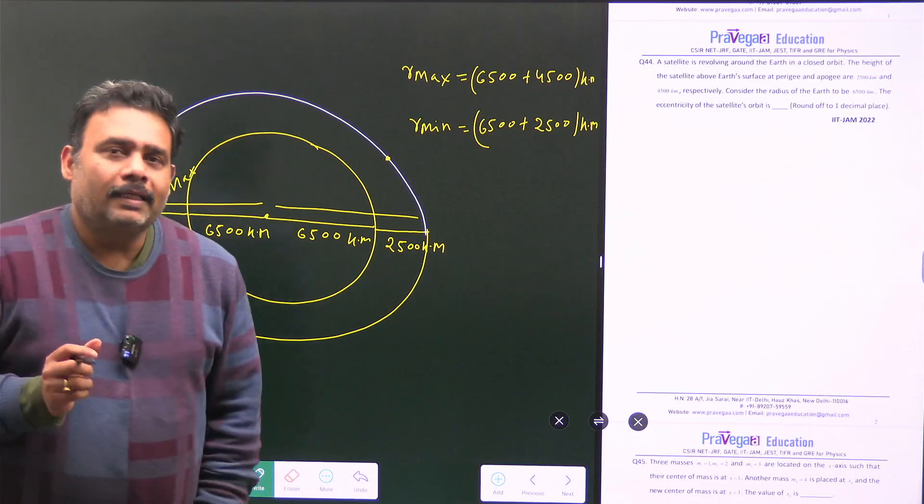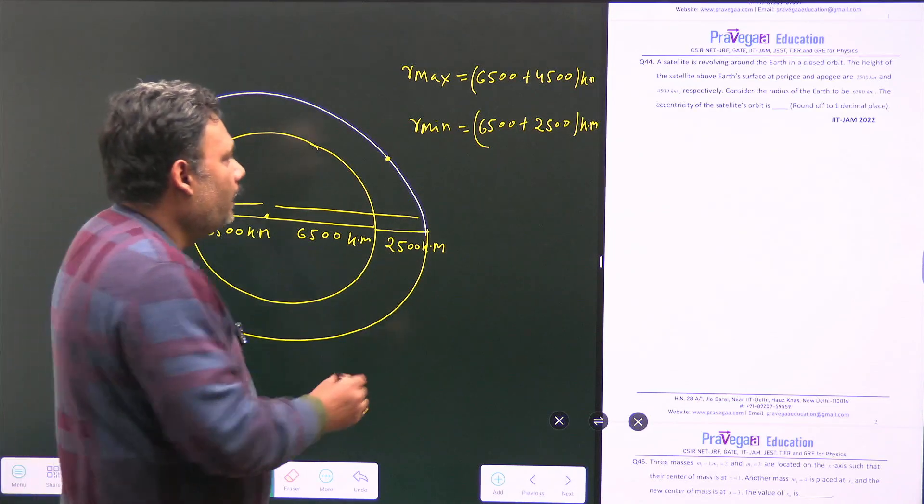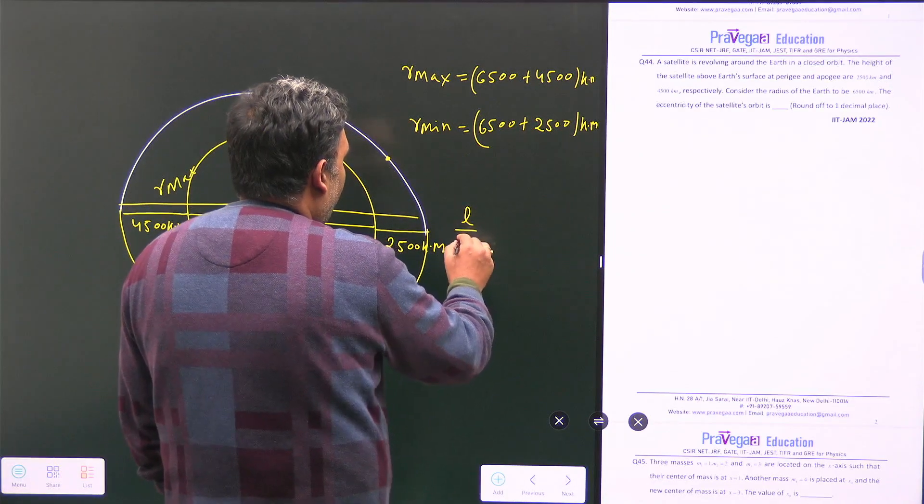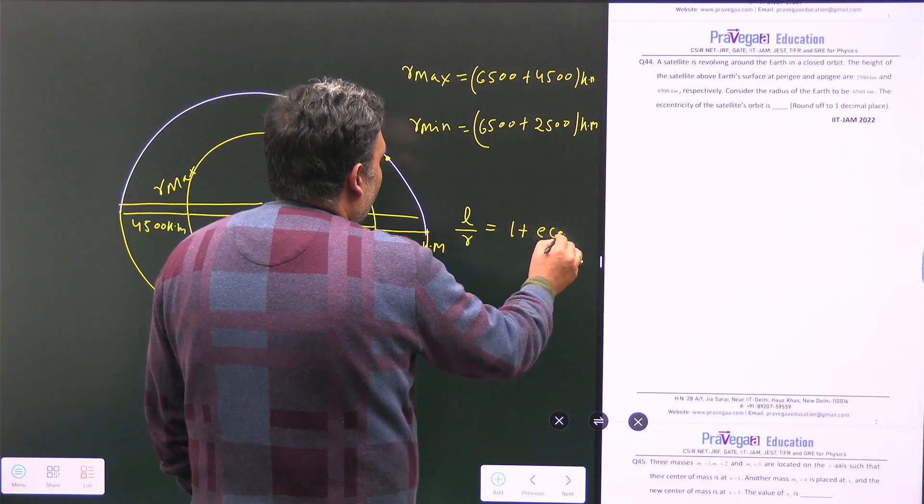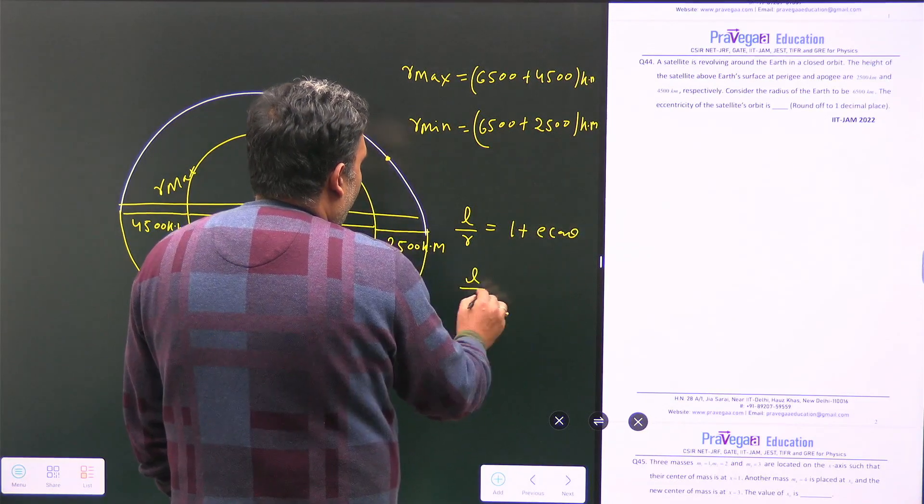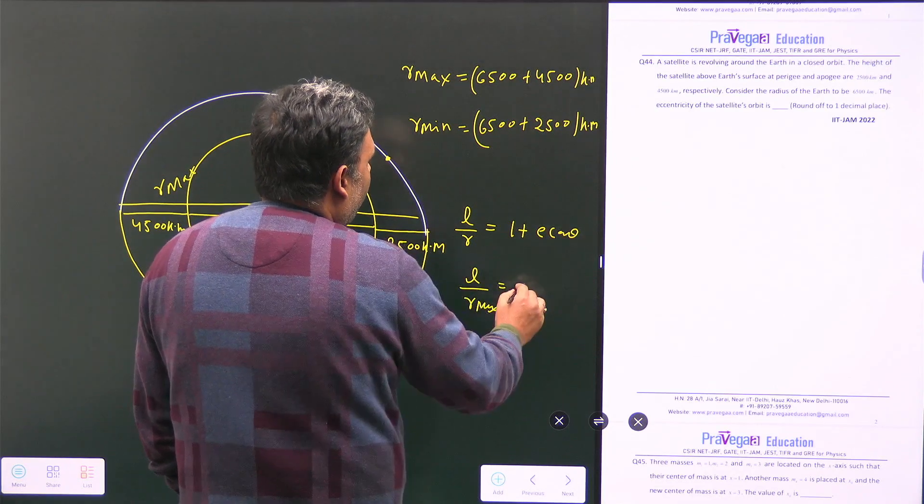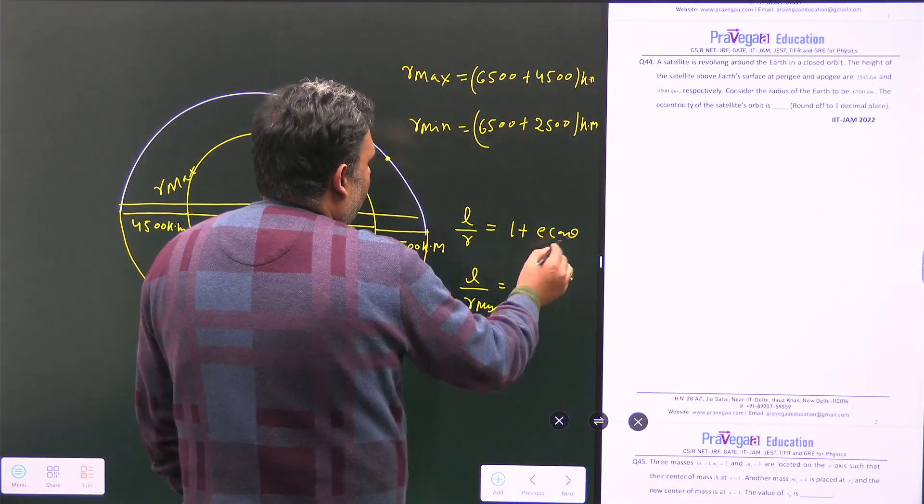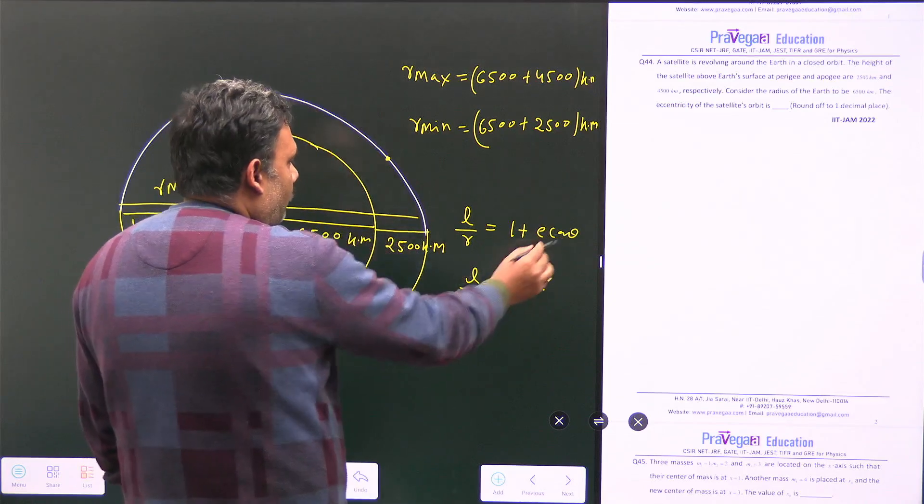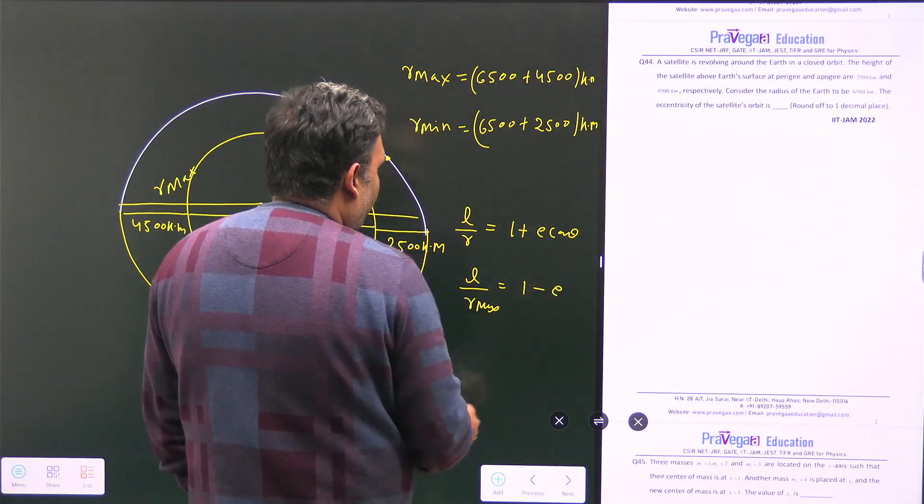And what will happen at the r maximum and r minimum? We have equation of orbit that is l upon r is equal to 1 plus e cos theta. So we have l upon r maximum. We have cos theta must be, so if r is maximum, then cos theta must be minimum.